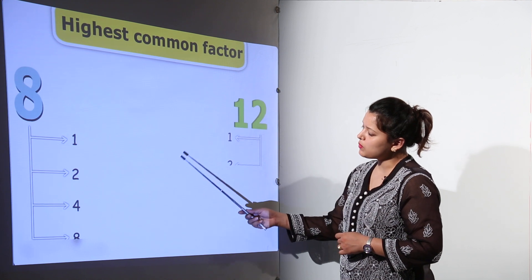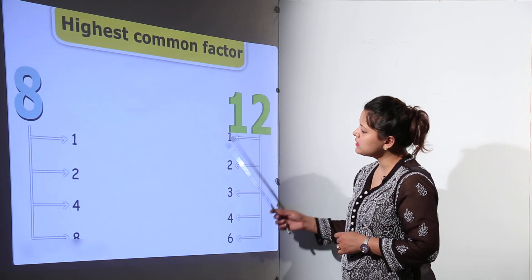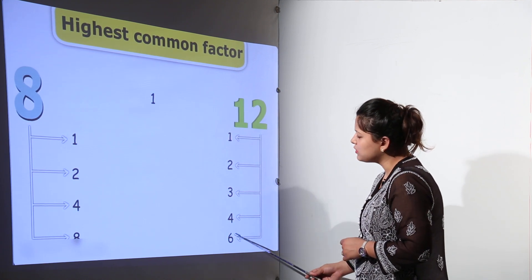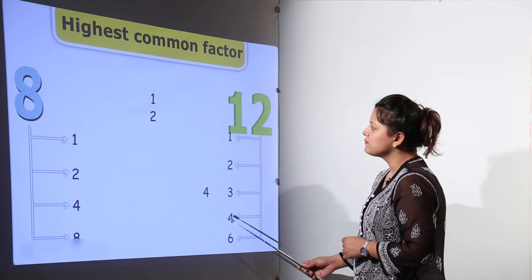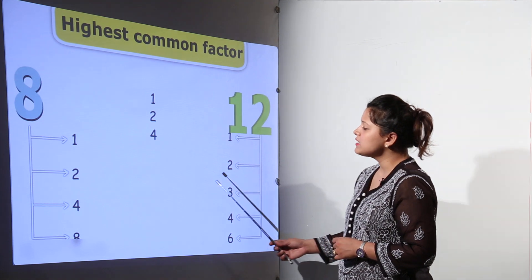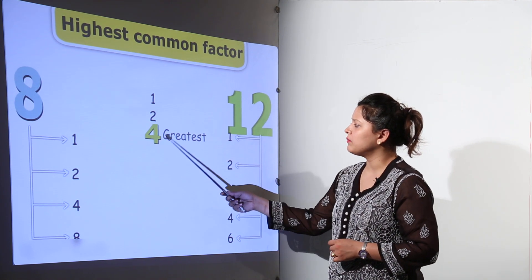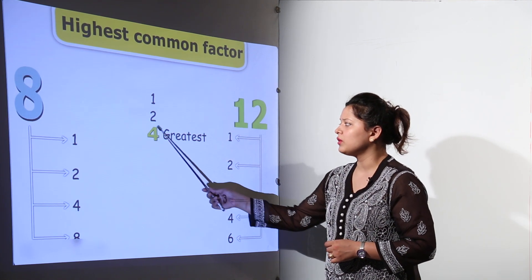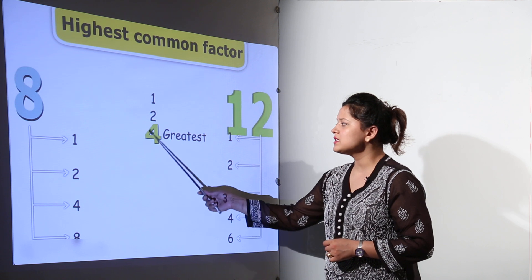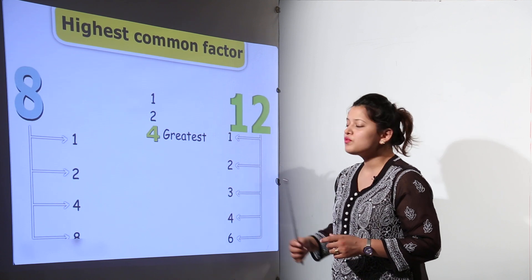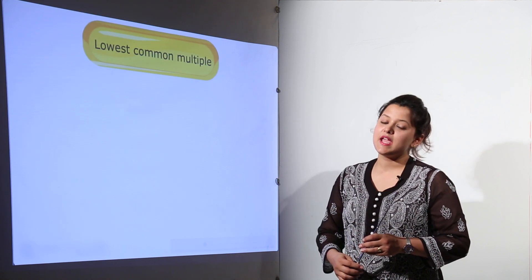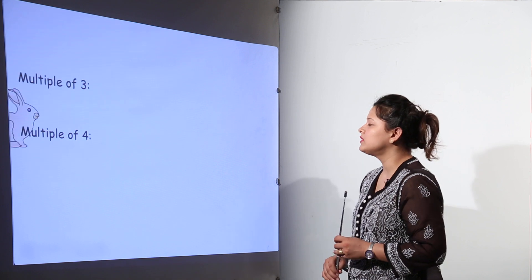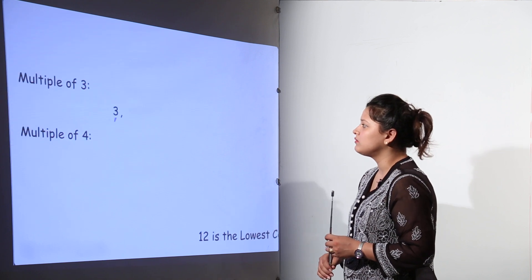8 has the factors 1, 2, 4, and 8. 12 has the factors 1, 2, 3, 4, and 6. The common factors are 1, 2, and 4, but the greatest is 4. So 4 is the HCF, or we call it the GCD, of 8 and 12.